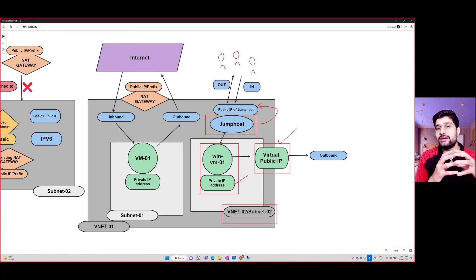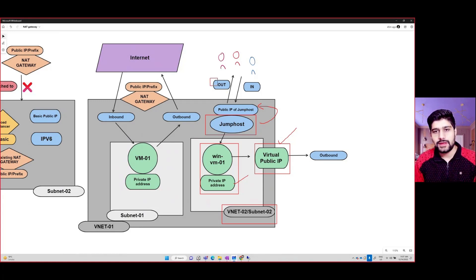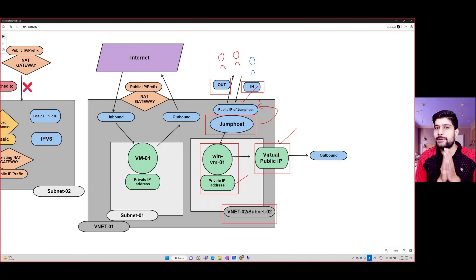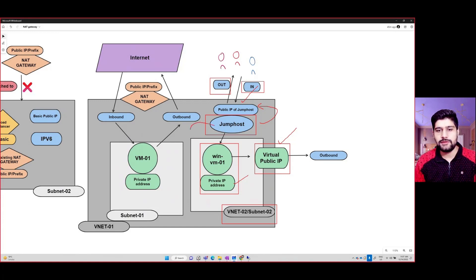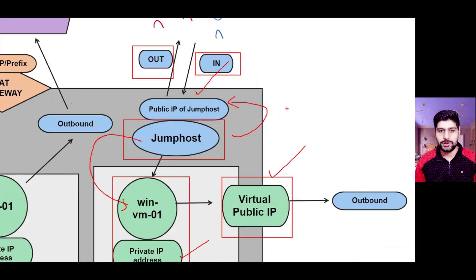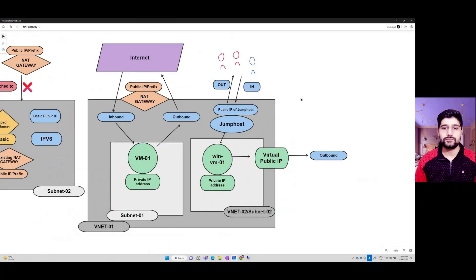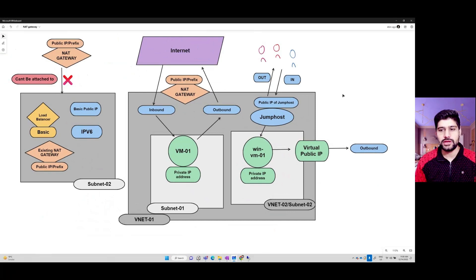Another option: let's say you have a jump host VM with a public IP assigned to it. If you assign a public IP to a VM, all outbound and inbound communication happens over that public IP. So we use this jump host to connect over the internet, and from this jump host I can RDP inbound into a backend VM.